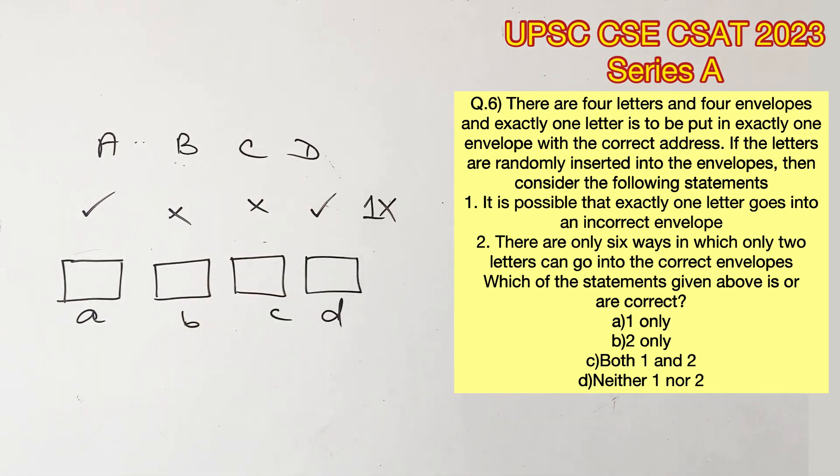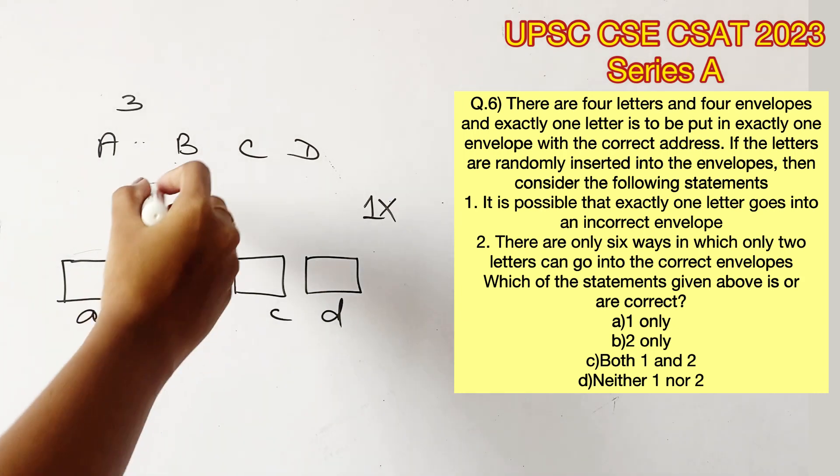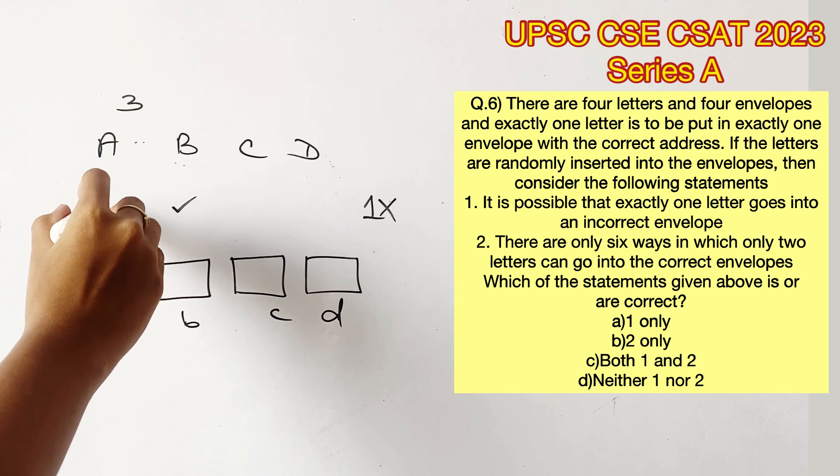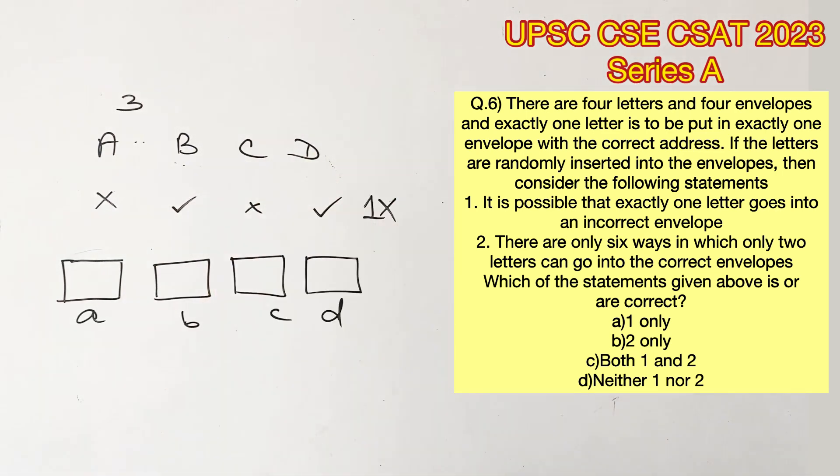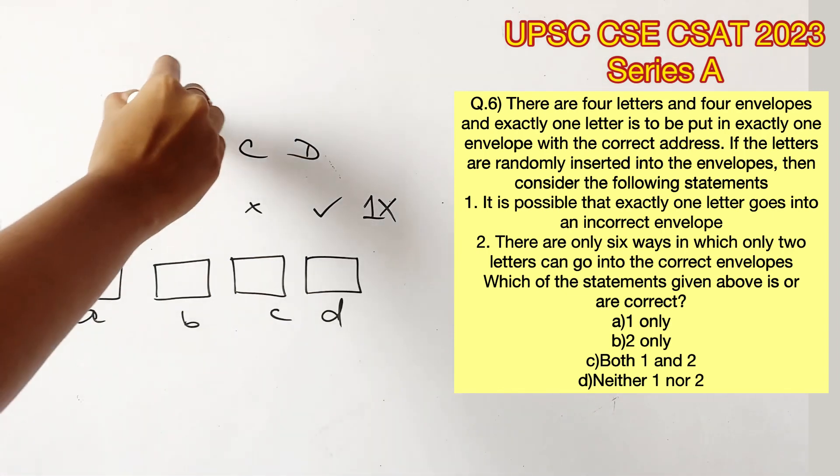So we got three possibilities considering that one of the correct envelopes is A. Next, we can take where B is correct and the other possibilities. So B and C are correct, A and D are wrong. B and D are correct, A and C are wrong. So there are two possibilities.